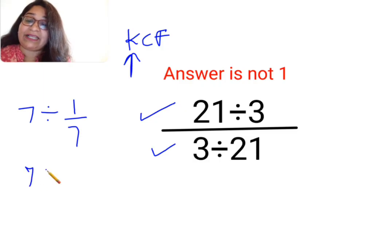So K stands for keeping the first number as it is. C stands for changing the division sign to multiplication. F stands for flipping or taking reciprocal of 1 upon 7 which is 7.